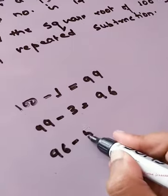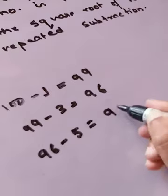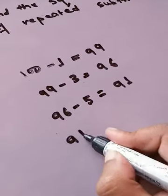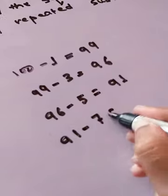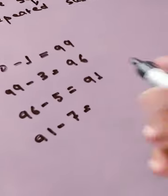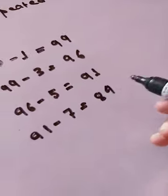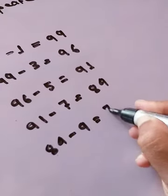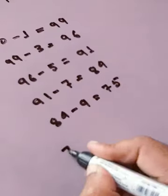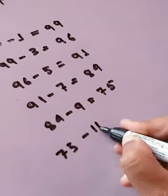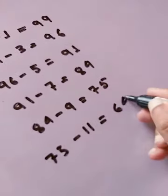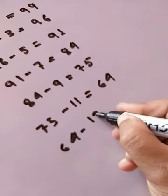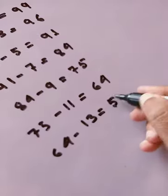The next odd number is 7, so 91 minus 7 equals 84. Then minus 9 gives 75. Next odd number is 11, so 75 minus 11 equals 64. Then odd number 13: 64 minus 13 equals 51.